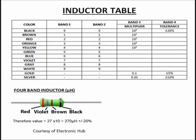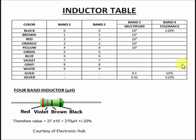Now let us discuss inductor specification and color code reading. Before reading inductor color coding, you need to memorize this table first. The table is almost the same as the resistor color code table — same colors and same arrangement. You can use the same memory trick: create a story using the first letter of each color.